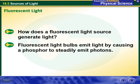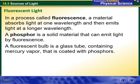A fluorescent light bulb emits light by causing a phosphor to steadily emit photons. In a process called fluorescence, a material absorbs light at one wavelength and then emits light at a longer wavelength.